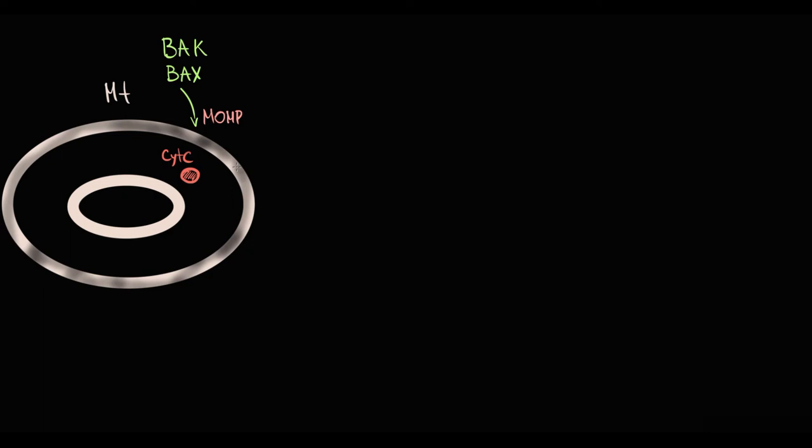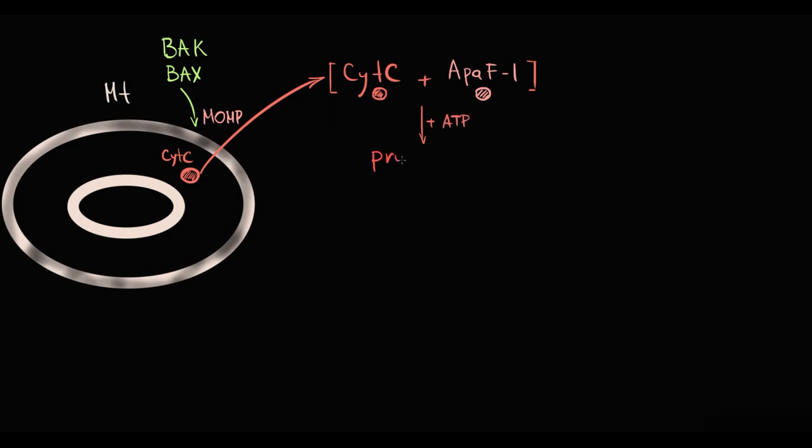The content in mitochondrial intermembrane space will be released into the cytosol, including cytochrome C. Once cytochrome C is released into the cytosol, it initiates a caspase cascade. Cytochrome C binds to apoptotic protease activating factor 1. This complex together with ATP molecule binds to procaspase 9. This results in formation of a massive protein complex called apoptosome.